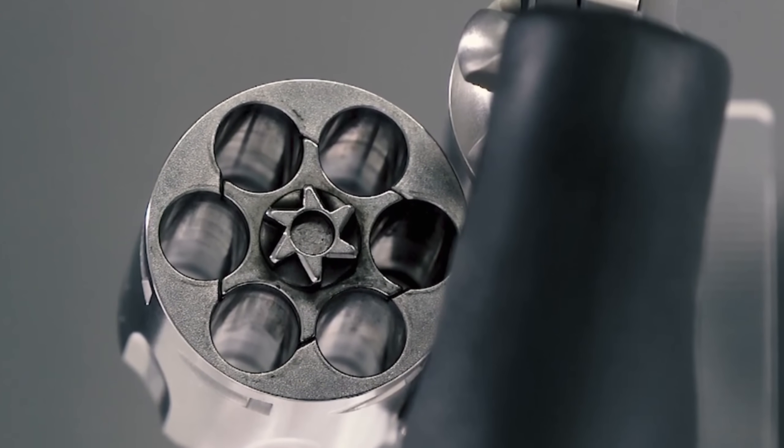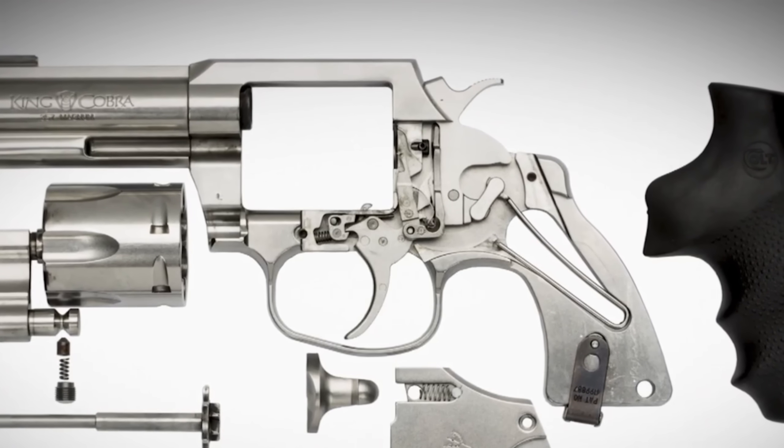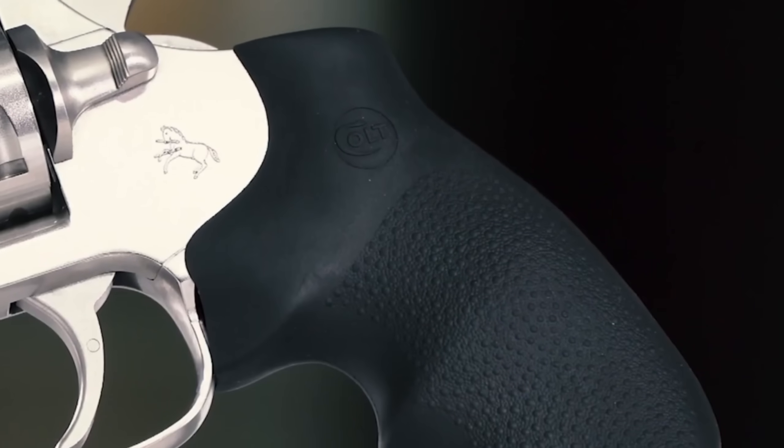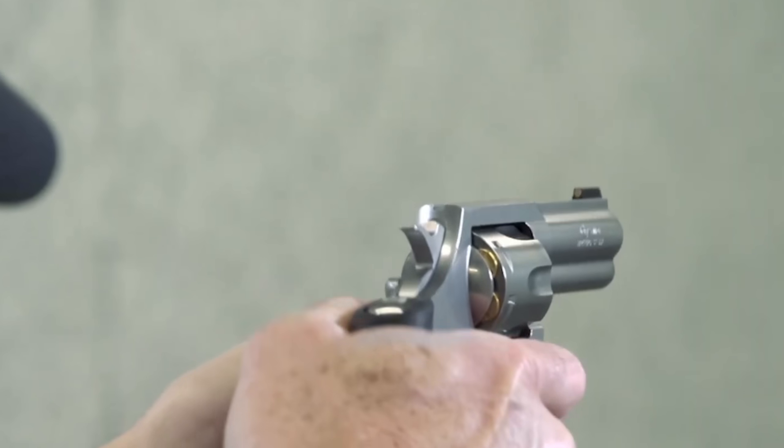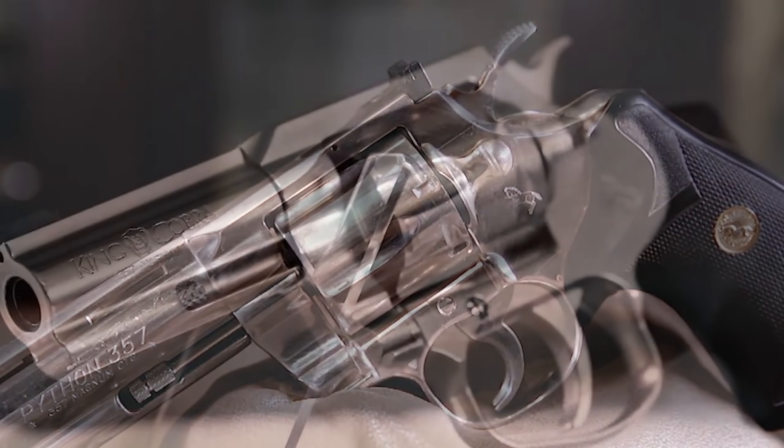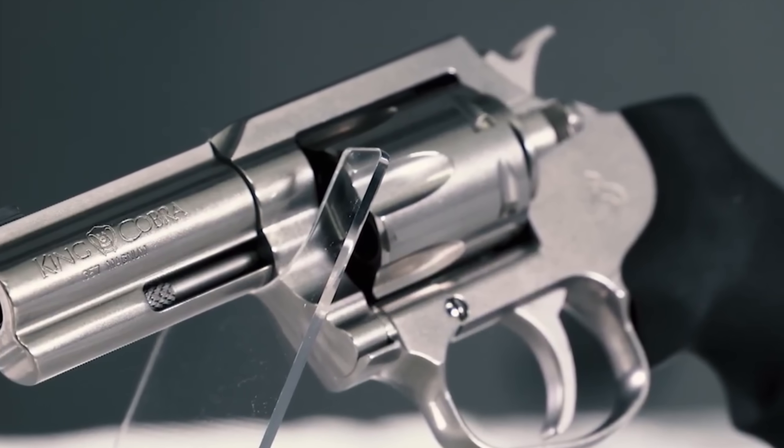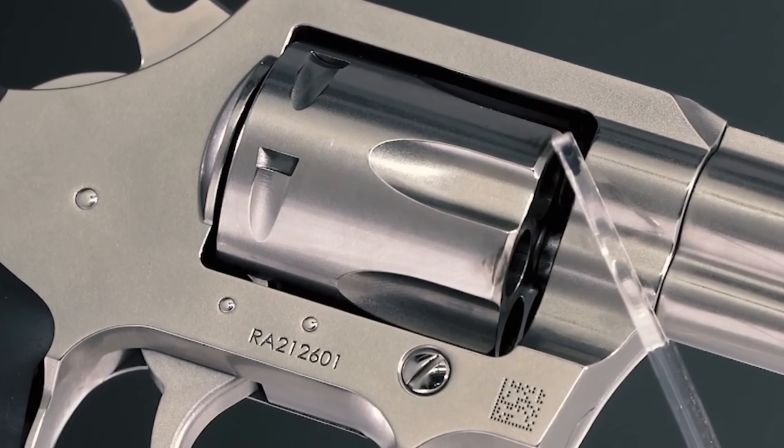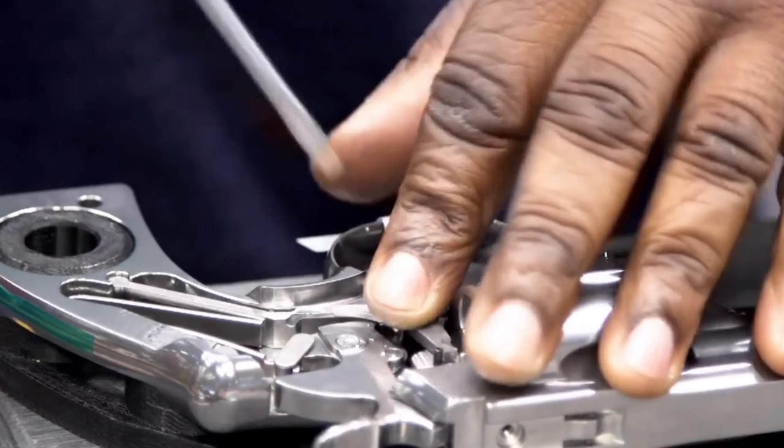Once all parts are in place, the revolver moves on to final adjustments. Technicians inspect every screw, groove and spring, making minor tweaks to ensure everything is tight and aligned. The revolver is then test fired with blank ammunition behind protective barriers. This live check verifies smooth cycling, proper chamber alignment and reliable ejection. Any revolver that doesn't pass this test goes back for further adjustment until it meets the manufacturer's standards.